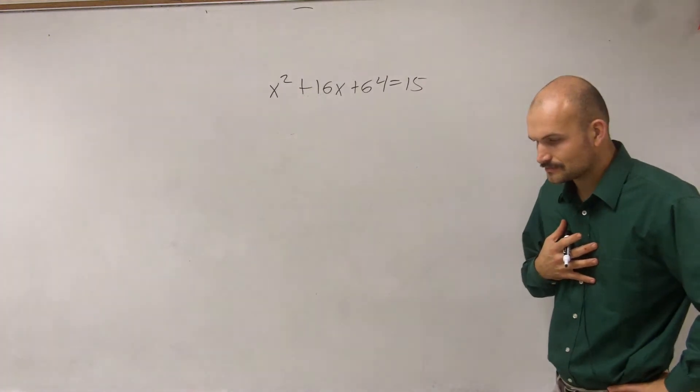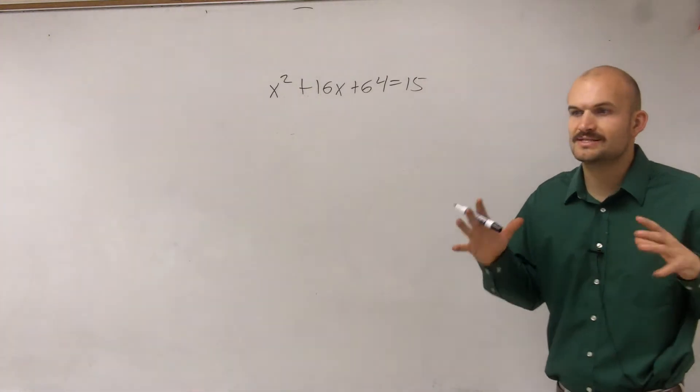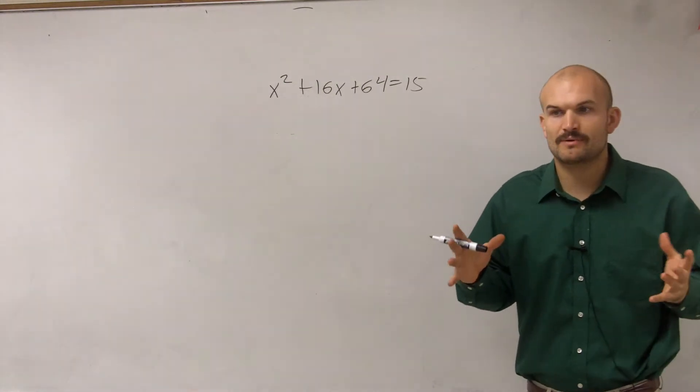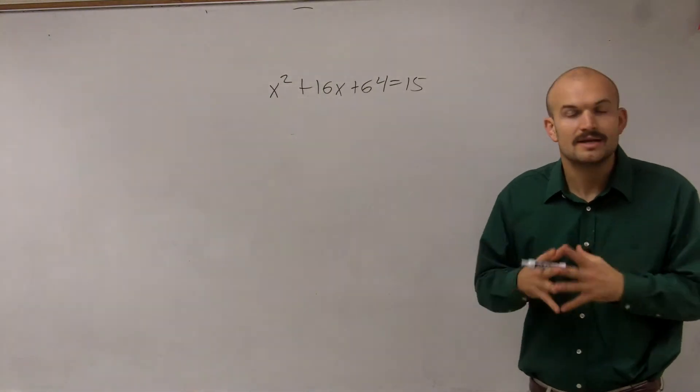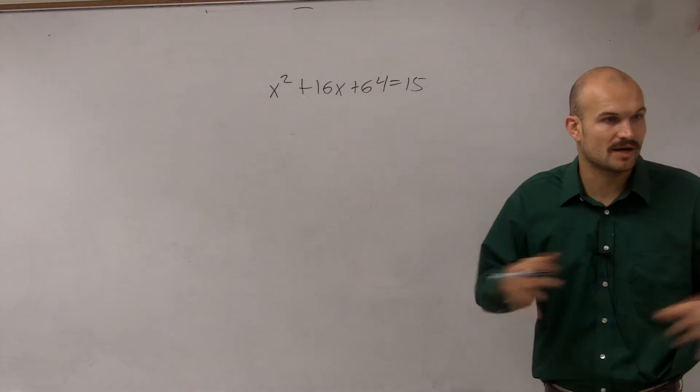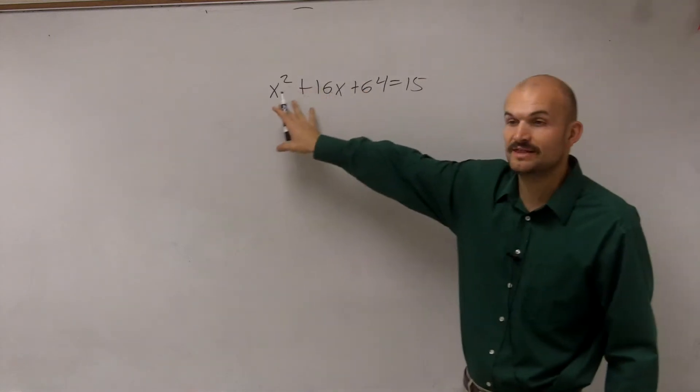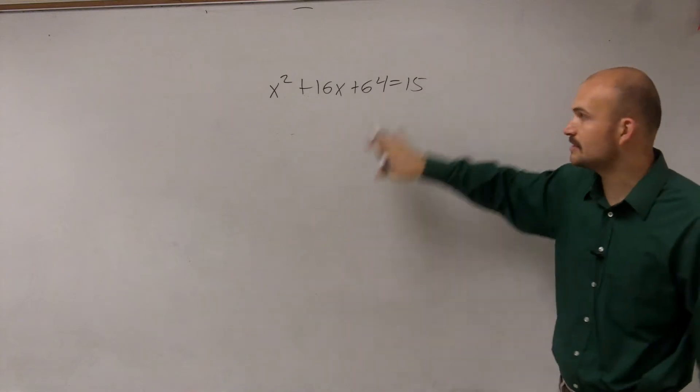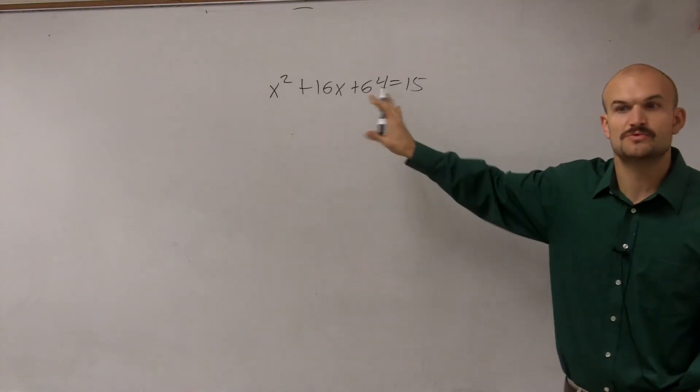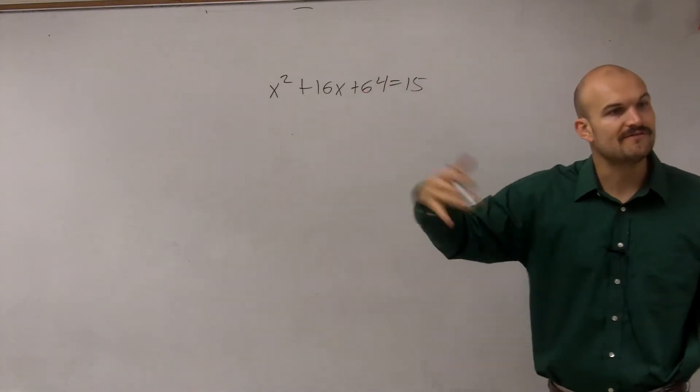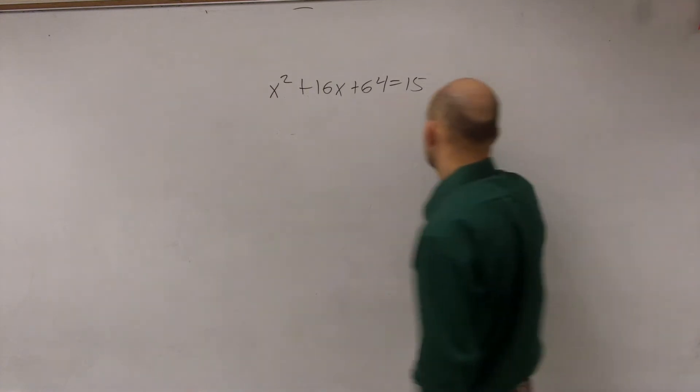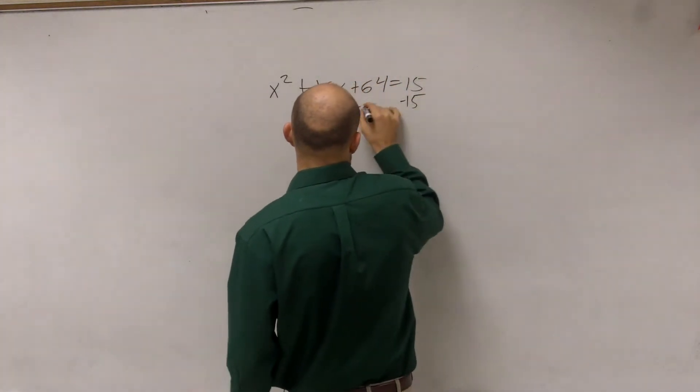So what we're going to want to do is we're going to want to see if we can get this to where we have a square root in there. Now, usually what we've always done, what I've told you guys to do, is when you have a problem like this where we need to solve, you need to find the values of x, the first thing we always did was set it equal to 0 because when you set it equal to 0, you can factor it and use the 0 product property.